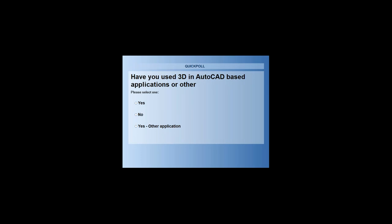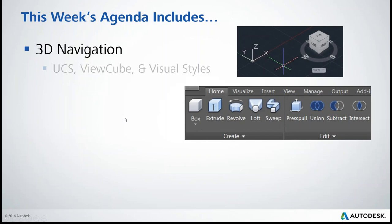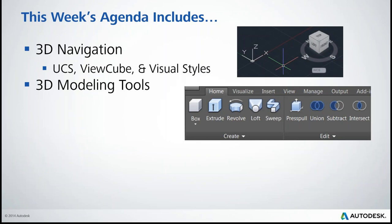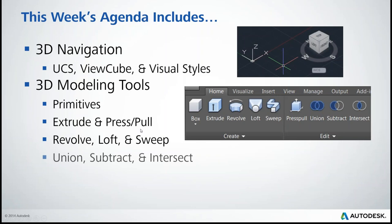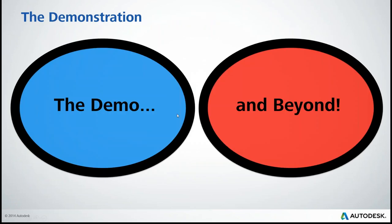Let's go ahead and take a look at today's agenda. We're going to begin with Victoria showing us a little bit about 3D navigation in AutoCAD - working with the UCS, ViewCubes, and the visual styles we have available. Then moving on to the 3D modeling tools, which include the Primitives, Extrude, Press Pull, Revolve, Loft, and Sweep, as well as Union, Subtract, and Intersect. Then we're going to hand it over to Steve to put it all together. Let's go ahead and hand it over to Victoria.